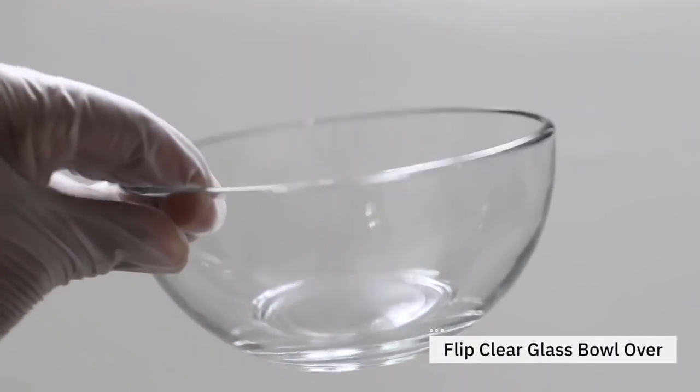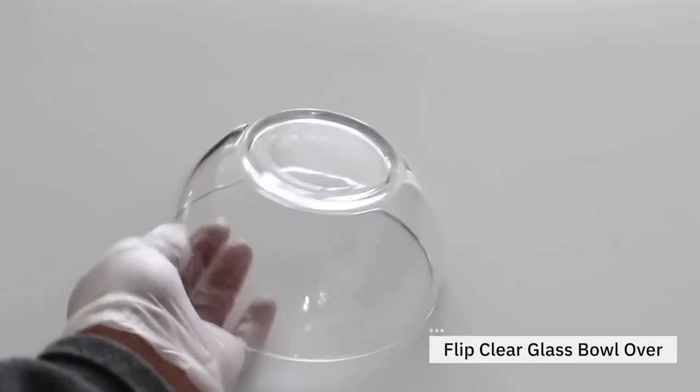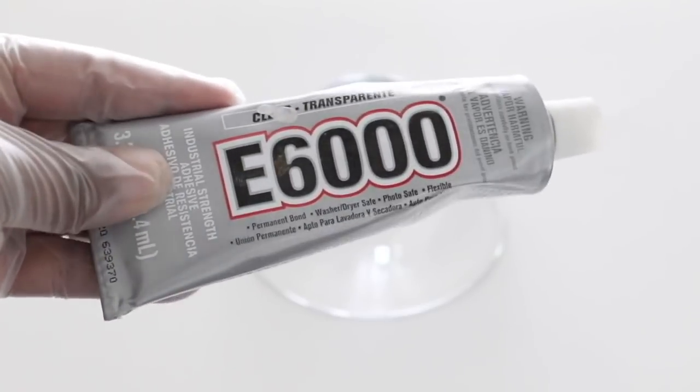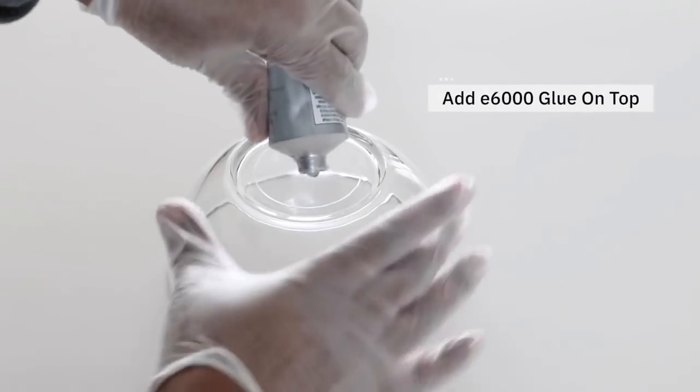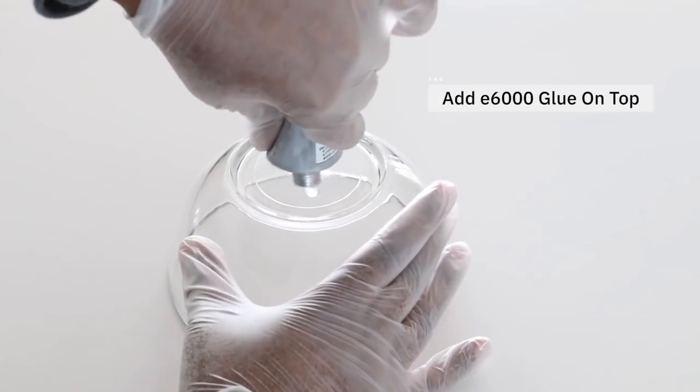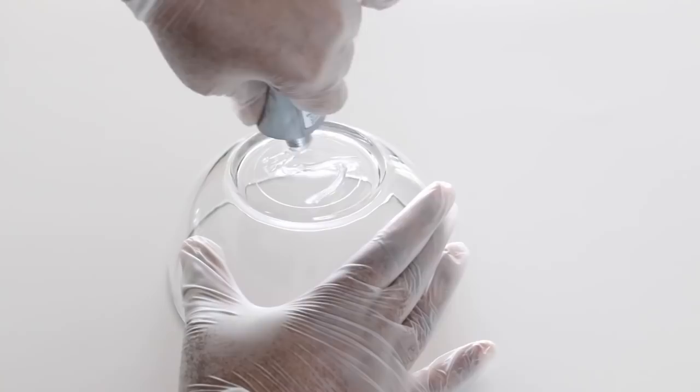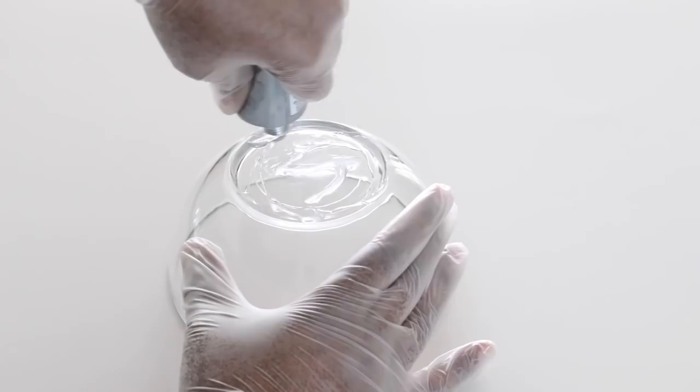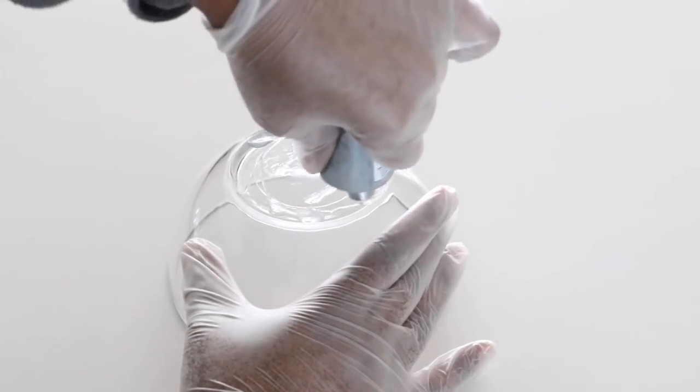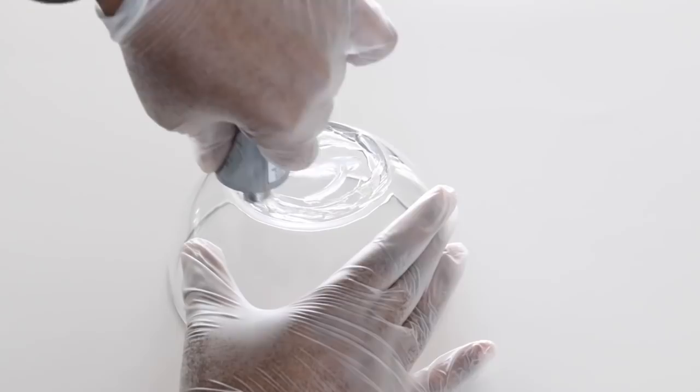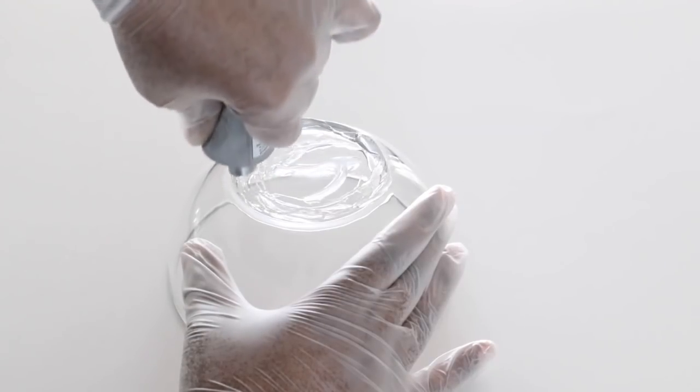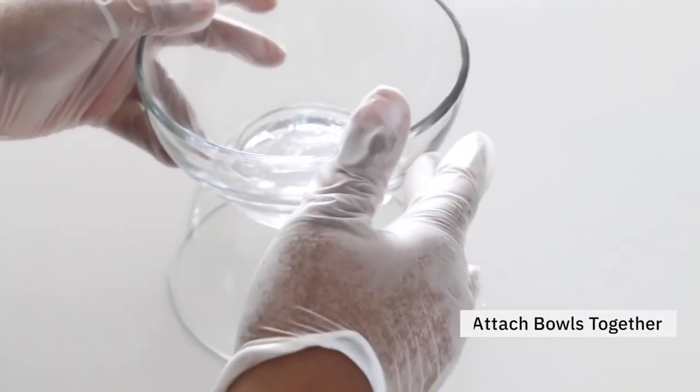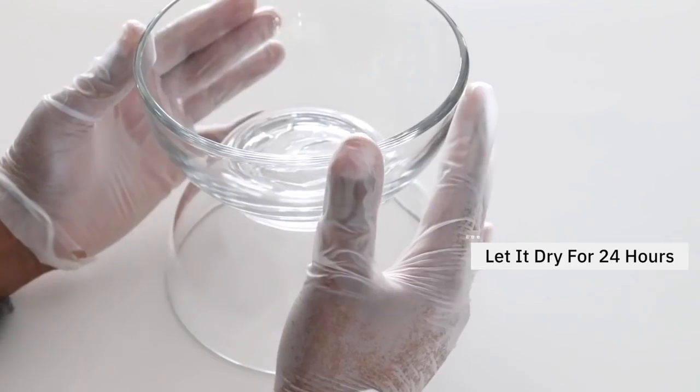So I decided to get two bowls from Dollar Tree. These are clear bowls and what I'm going to do is just flip one upside down and then I'm going to take E6000 industrial glue and just apply it right on the top. You want to make sure you have a good amount of the glue on top because we don't want it to go anywhere. Now that we have the glue on it, I'm just going to place the other bowl on top and let it dry for 24 hours.